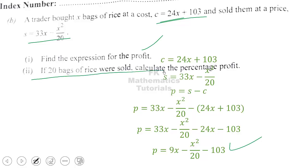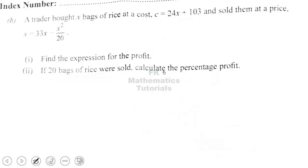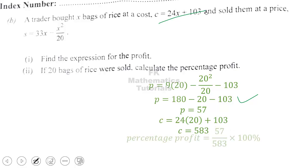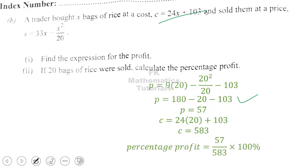For part b(ii): if 20 boxes of rice were sold, calculate the percentage profit. We substitute x = 20 into the profit expression, which gives a profit of 57. Then we substitute x = 20 into the cost expression C = 24x + 1 to get a cost price of 583. Percentage profit = (profit ÷ cost price) × 100% = (57 ÷ 583) × 100% ≈ 9.78%.